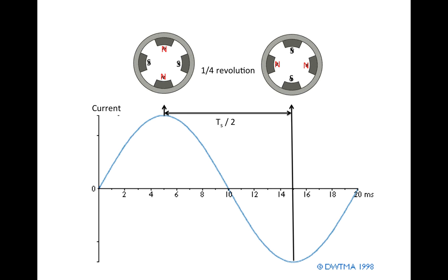The examples so far correspond to one phase connected to one pole pair. But in practice, one phase can be connected to more than one pole pair. Here's an example of the same current phase but now connected to four poles — two pole pairs. The wiring in the stator is done such that the magnetic north and south poles alternate in space: north, south, north, south.